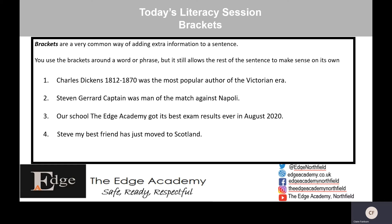If we look at the very first one — 'Charles Dickens (1812 to 1870) was the most popular author of the Victorian era' — if we put the brackets around '1812 to 1870' the sentence would still make sense on its own: 'Charles Dickens was the most popular author of the Victorian era.' So when you use the brackets it will still make the rest of the sentence make sense. Pause the clip, write the sentences out using the brackets, and then we'll go on to the answers.